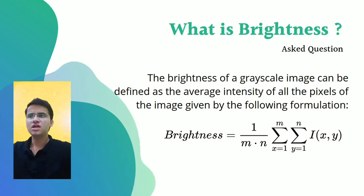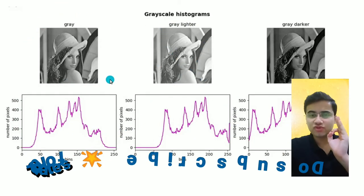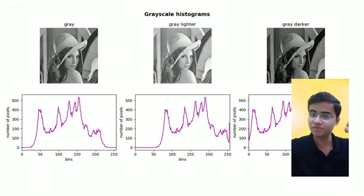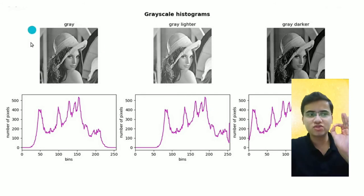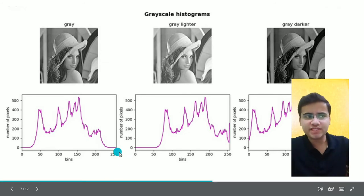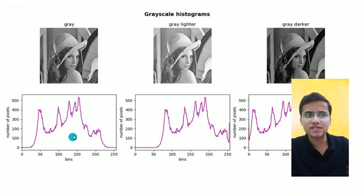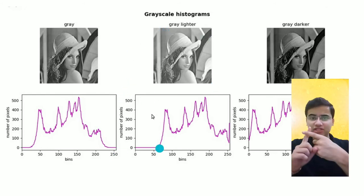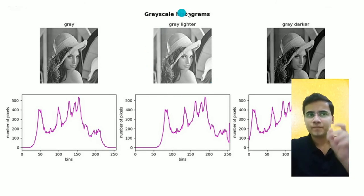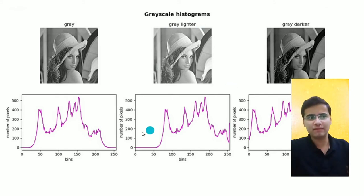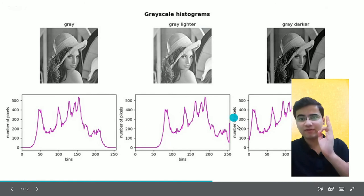Now let's come to grayscale histograms. A grayscale image has a single channel — the grey channel. If brightness is increased, the image becomes lighter, meaning the pixel intensity values increase slightly. So the histogram that was at one position shifts to the right. Now you can understand how professional camera users observe this.